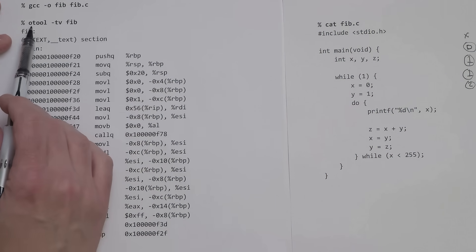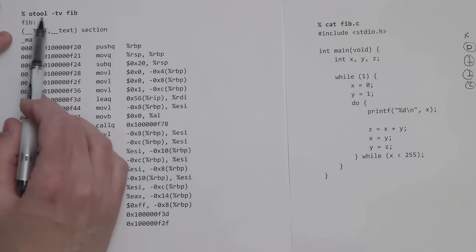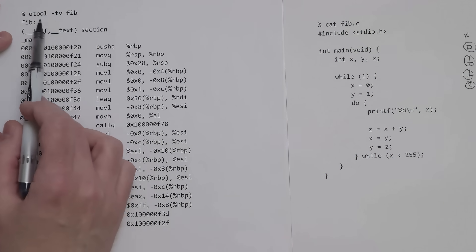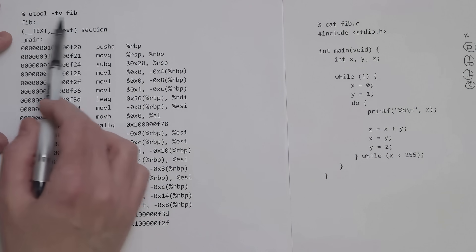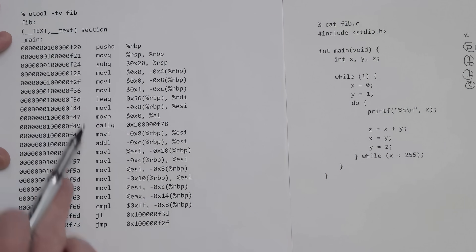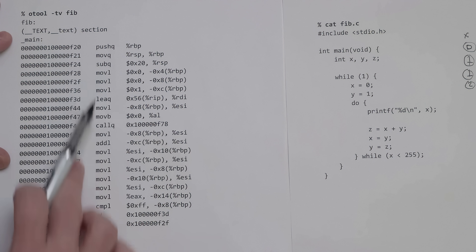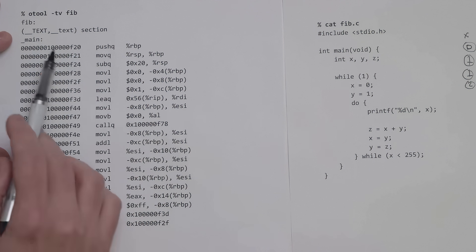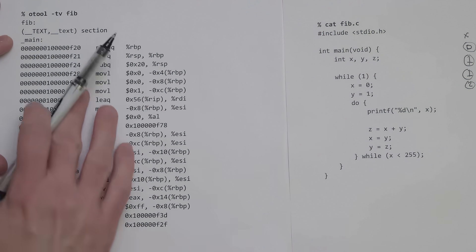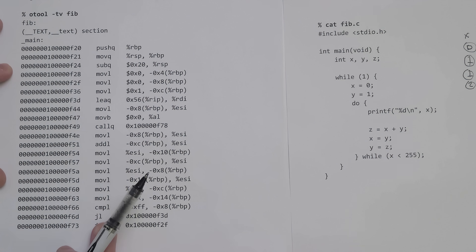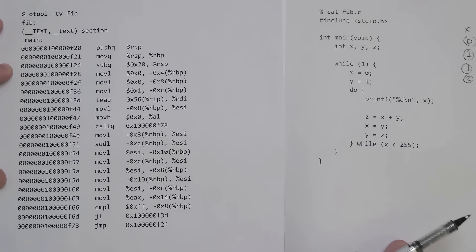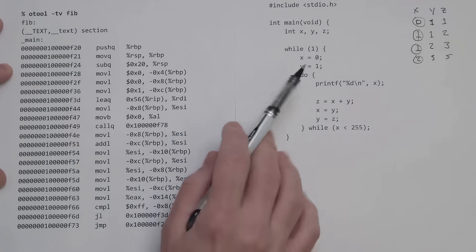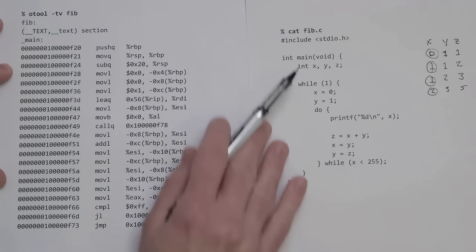But what I did here is actually disassemble it. This command, just on my MacBook, prints out the machine language instructions that were compiled. We're looking at the compiled version of this program that we would run.